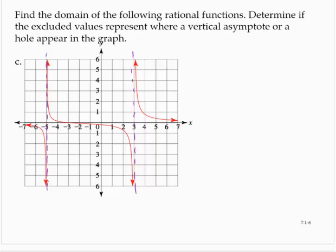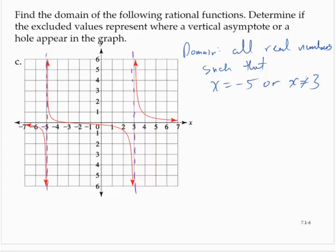So therefore, the domain is all real numbers such that x is not equal to negative 5 or x is not equal to 3. And both of these are vertical asymptotes, as shown already in the graph.